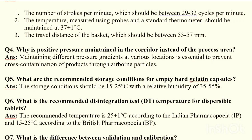Why is positive pressure maintained in the corridor instead of the process area? Maintaining different pressure gradients at various locations is essential to prevent cross-contamination of products through airborne particles. Positive pressure is maintained in corridors instead of the process area to prevent cross-contamination.